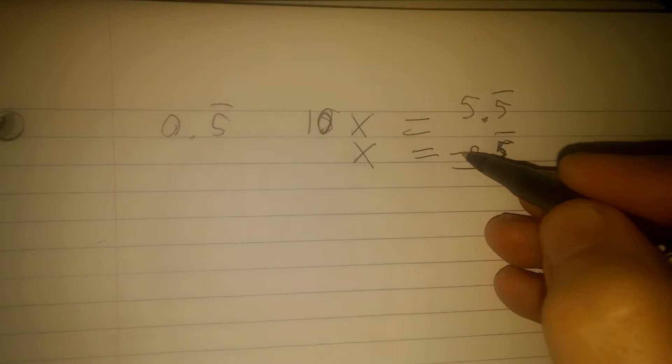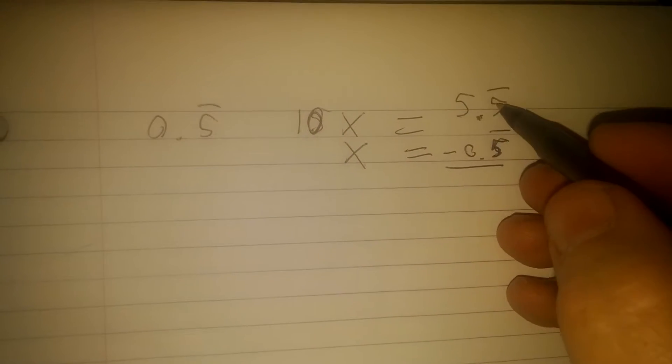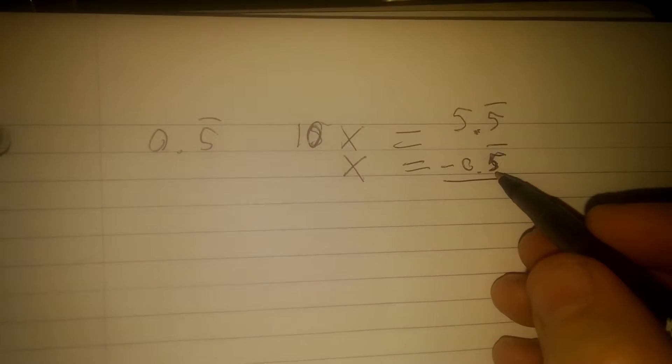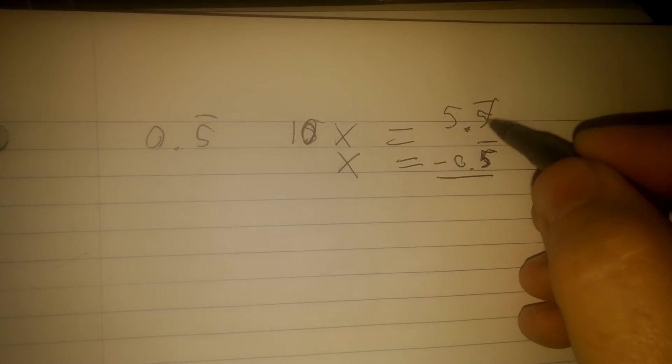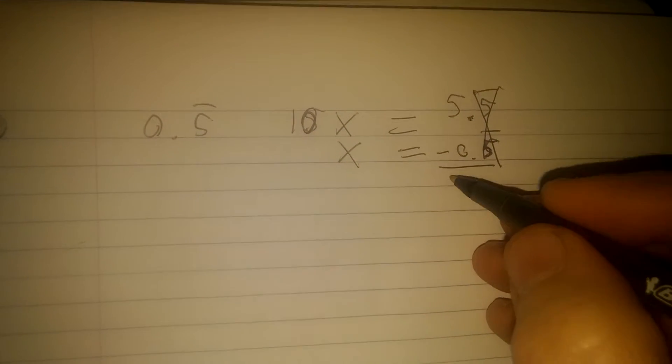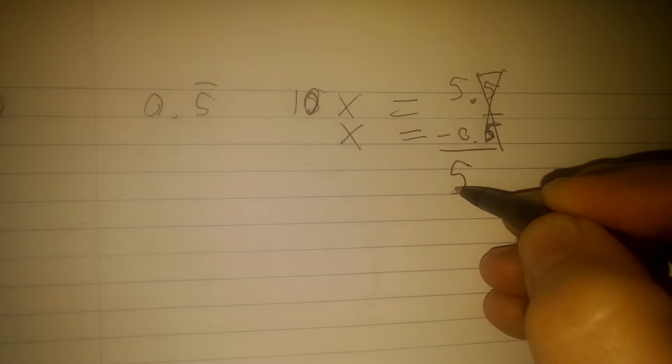Now I can subtract. I can subtract 5.5 repeating minus 0.5 repeating. This 0.5 repeating goes away, and I'm left with simply 5.